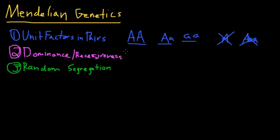The second postulate was dominance and recessiveness. That's just saying that when we have these two alleles, typically one strain of an allele is dominant in respect to the other.